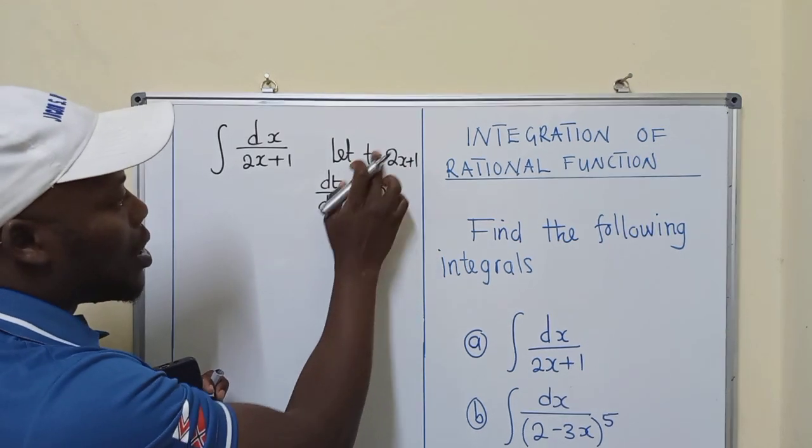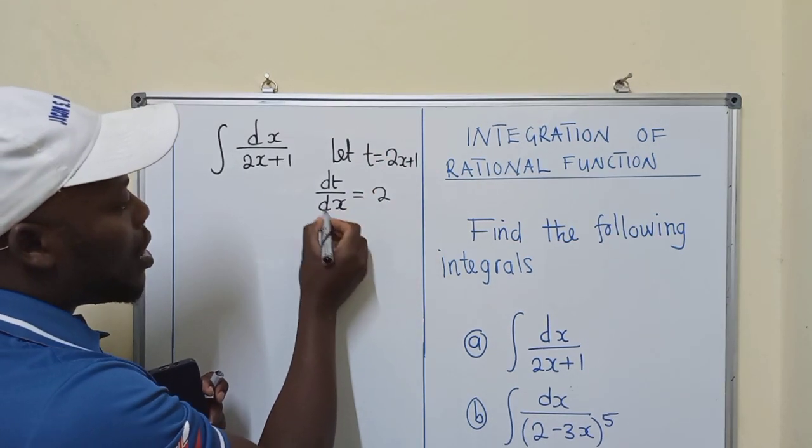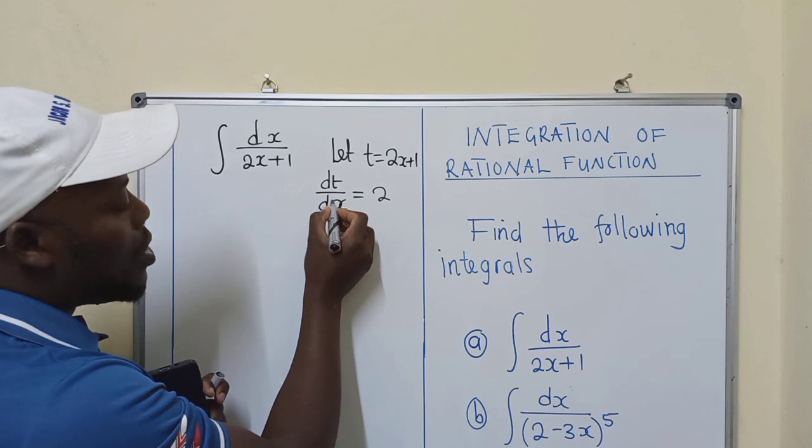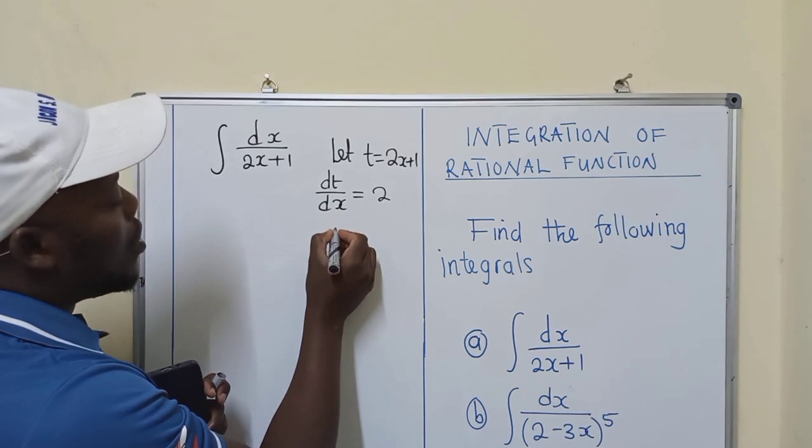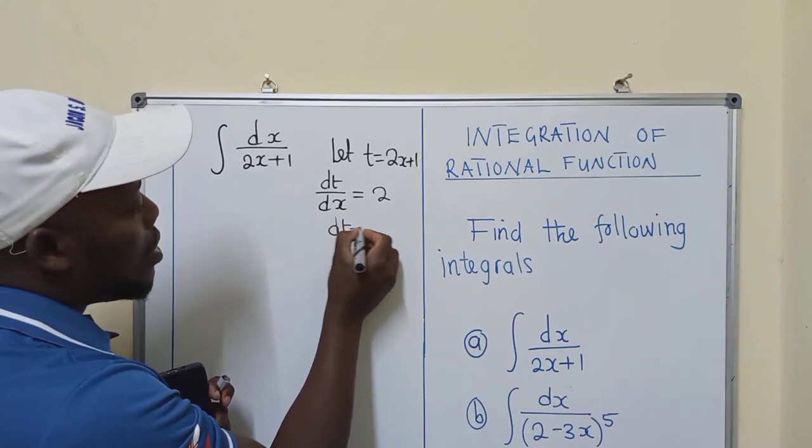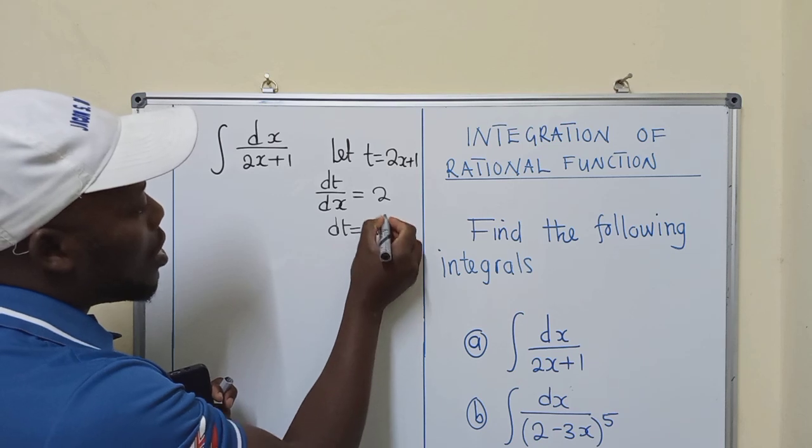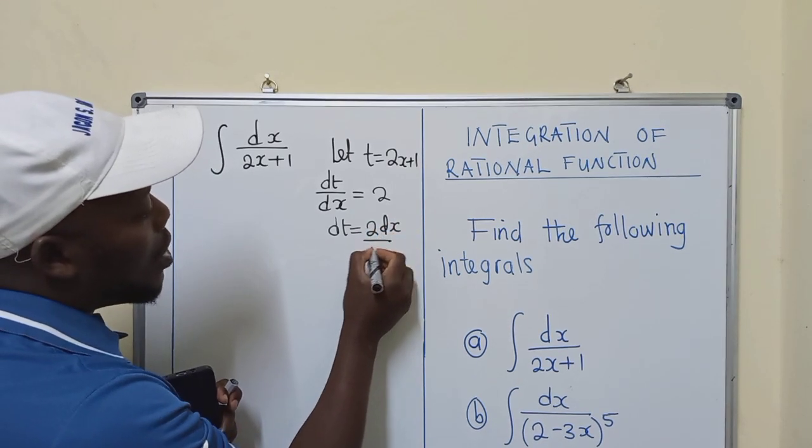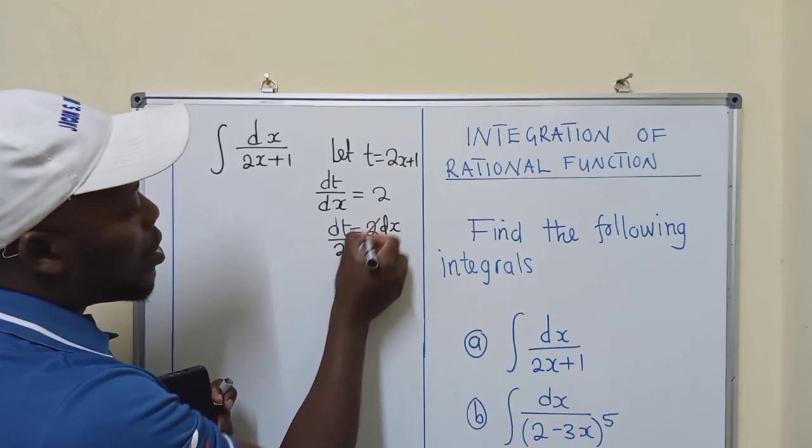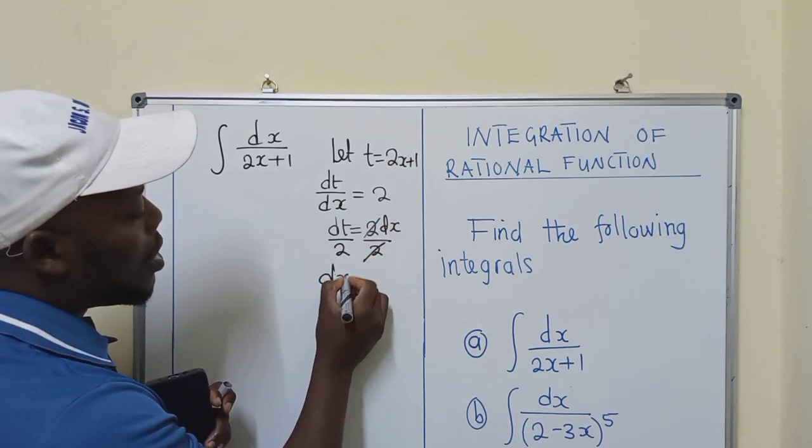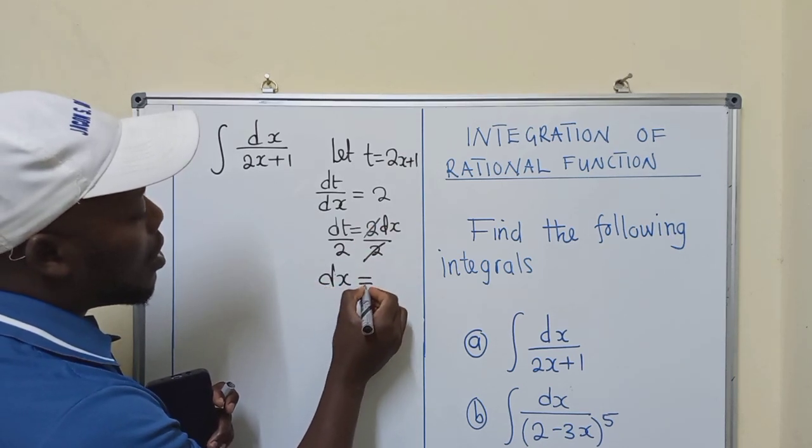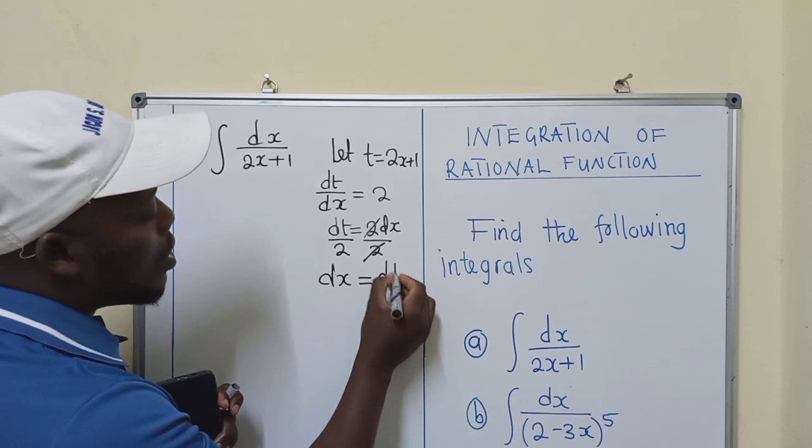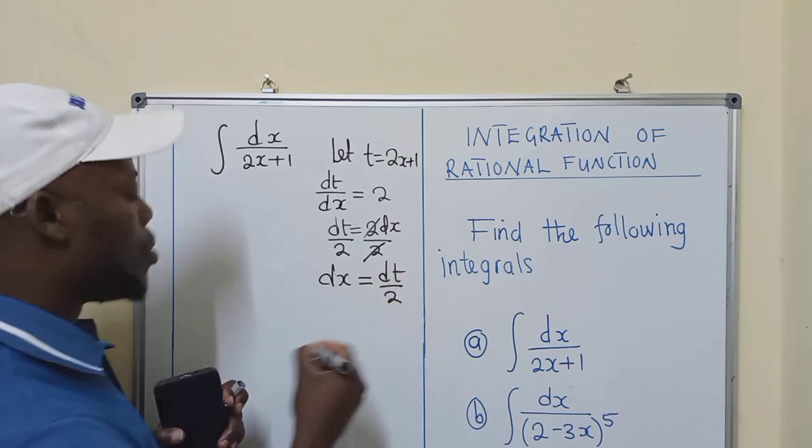So after differentiating this, you make dx subject of the formula. So it will be dt is equal to 2dx, you divide by 2, 2 and 2 cancel. We shall remain with dx is equal to dt over 2.